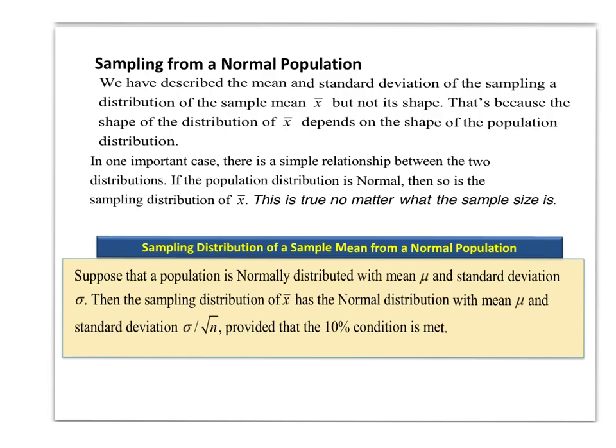Okay, so when you're sampling from a normal population, it's very important that you consider the shape of the distribution. The shape will affect how you make decisions. A very simple relationship is the fact that if your population is approximately normal, then your sample will always be approximately normal. There's a direct connection. This is true no matter what the sample size is. If your population is normal, you can automatically assume your sample is normal.